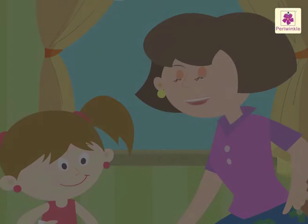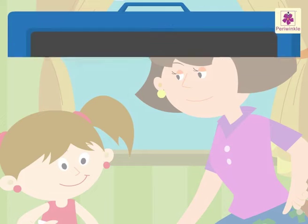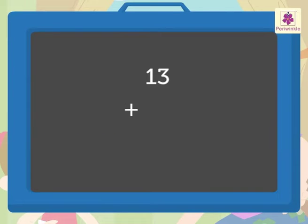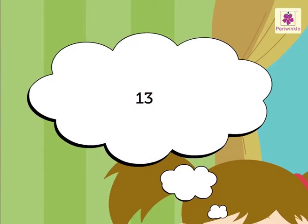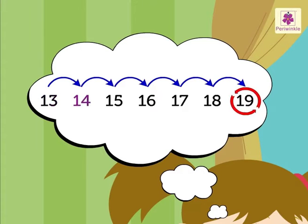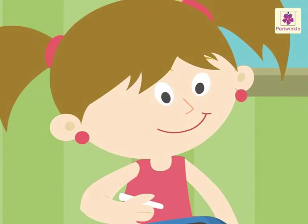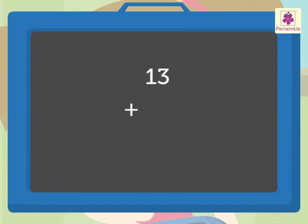Now, let's add another sum. 13 plus 6. Think of number 13. Now, count 6 steps forward from 13. 14, 15, 16, 17, 18, 19. We write it as 13 plus 6 is equal to 19.